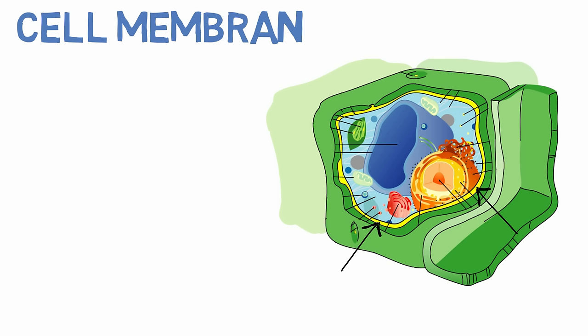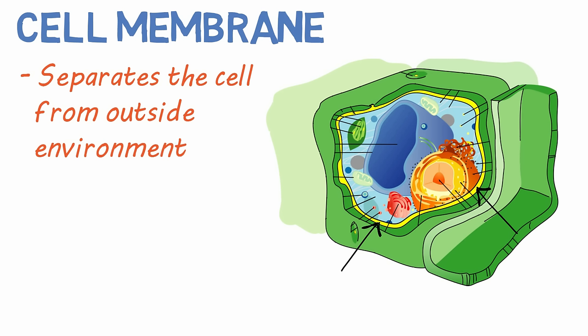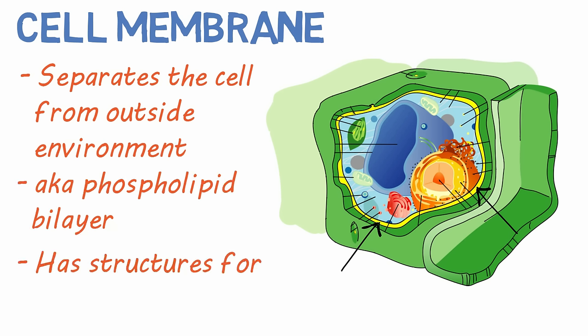The cell membrane is what separates the cell from the environment outside the cell. It is also known as the phospholipid bilayer and has various structures to allow for selective inflow and outflow of water and other molecules and compounds.